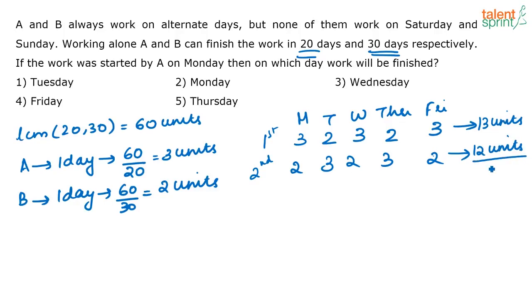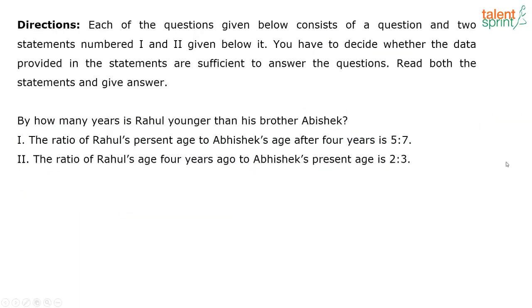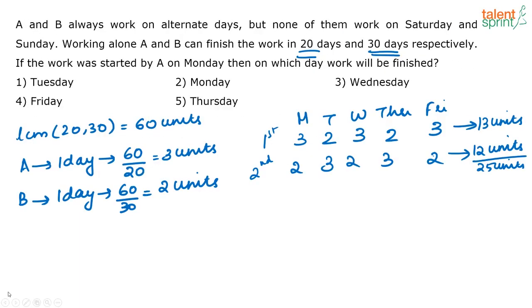Totally at the end of the second week, 25 units of work is completed. Totally they have to complete 60 units. So every 2 weeks, 25 units will get completed because this cycle will keep repeating.